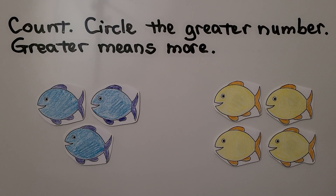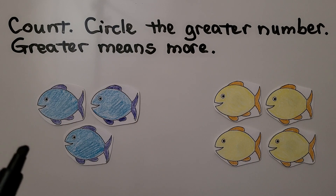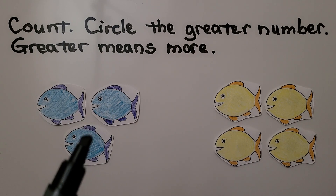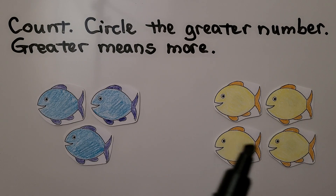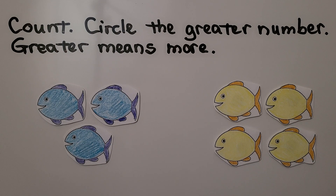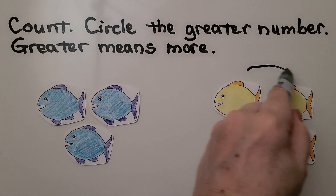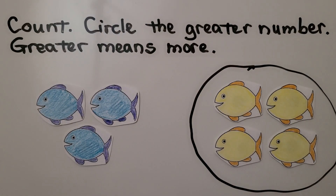Here we need to count, then circle the greater number — and greater means more. How many blue fish? We can count 1, 2, 3. There are 3 blue fish. How many yellow fish? We can count 1, 2, 3, 4 yellow fish. Which has the greater number — the blue fish or the yellow fish? If you said the yellow fish, you're right. 4 is a greater number than 3.